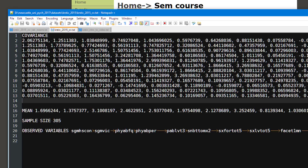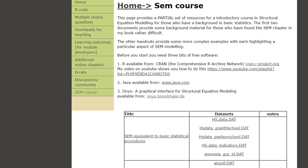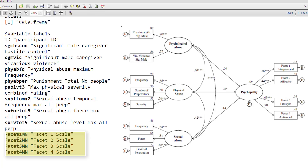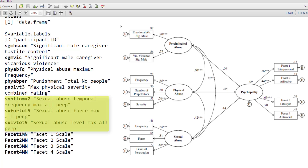Let's look at the article to see what diagram Krzic et al. came up with. You can see they hypothesize that psychopathy, the latent variable, is measured by four indicators. These four indicators in our covariance matrix are called facet1mm to facet4mm. Next, sexual abuse — that latent variable is measured by three indicators: level of penetration, force, and frequency. Those three variables are SMbottomx2, Xm4tot5, and Sxlvtot5.